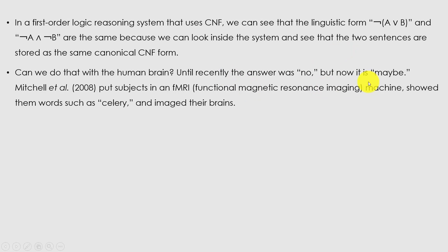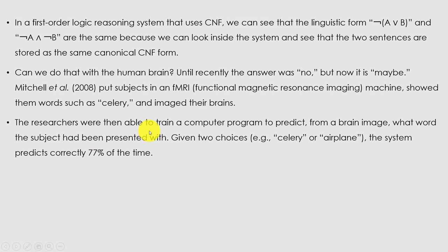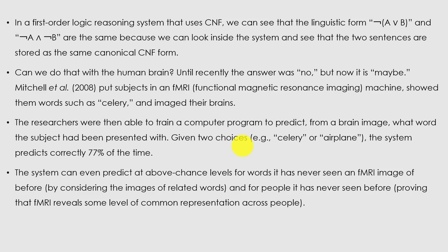Can we do that with the human brain? Until recently the answer was no, but now it may be possible using AI. Scientist Michael et al. put subjects in an fMRI — functional magnetic resonance imaging — machine and showed them words such as 'celery.' Researchers trained a computer program to predict from a brain image what word the subject had been presented with. Given two choices, the system predicts correctly 70% of the time, even for words and people it had never seen before.